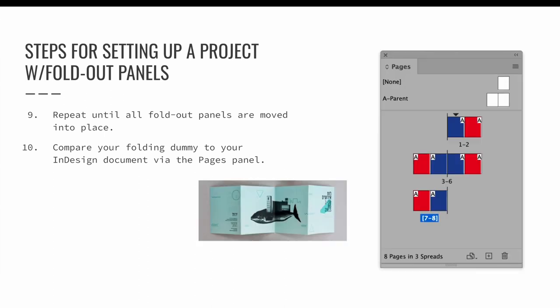You have now formatted a four page project that has two fold out panels — one panel folds out off the front page and one folds out off the back page. Take a minute to confirm your InDesign document matches your folding dummy. For our example, you should end up with an eight page InDesign project: four pages are the original base pages and the other four pages form the two fold out panels.